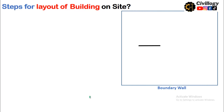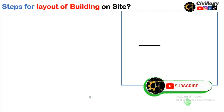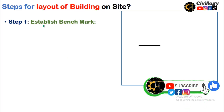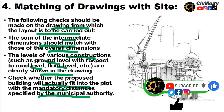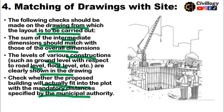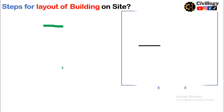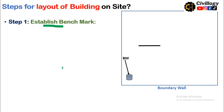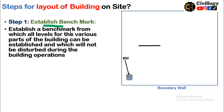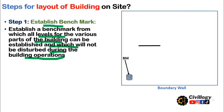Now, the first step in the actual layout on site is to establish a benchmark. A permanent benchmark should be set up from which all levels of various parts of the building can be established. It should be placed at a point that will not be disturbed during building operations.